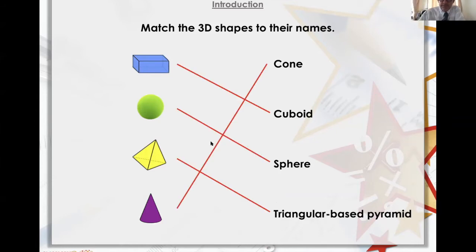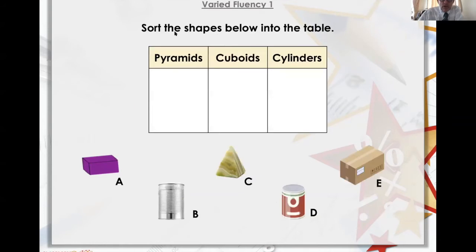Well done children. Sort the shapes below into the table - a pyramid. Put C in the pyramid, the cuboid - I'll put that purple one in over there. And the cylinder, put one of the tins in.